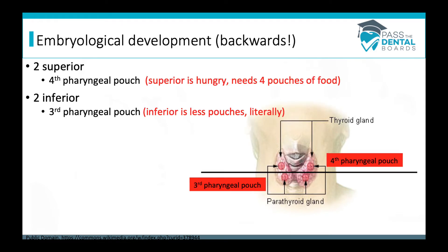Now we're going to move on to embryological development, and this is actually backwards and doesn't make as much sense as the blood supply. The two superior parathyroid glands are from the fourth pharyngeal pouch, and the two inferior are from the third pharyngeal pouch. The way to remember this: the superior one is hungry — it needs four pouches of food. Inferior literally means less, so we only need three pouches. The two inferior parathyroid glands are embryologically developed from the third pharyngeal pouch.